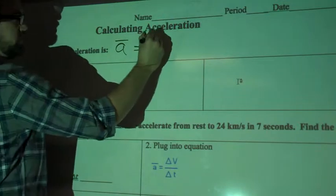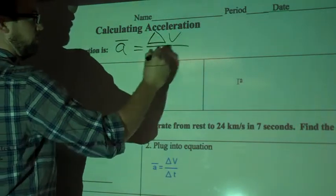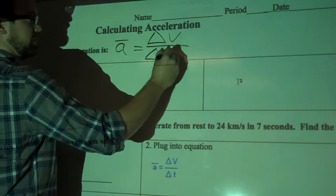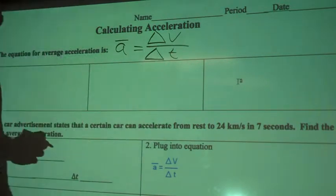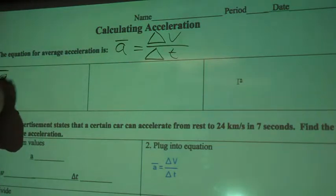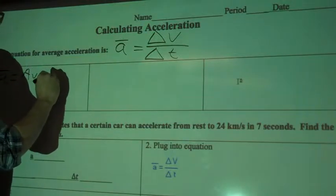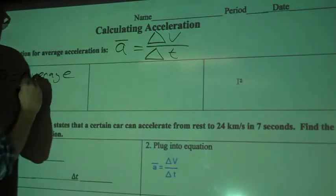and it's going to be the change, or delta, in velocity over the change in time, or delta t. And so that a, like this, with the line over it, is average acceleration.